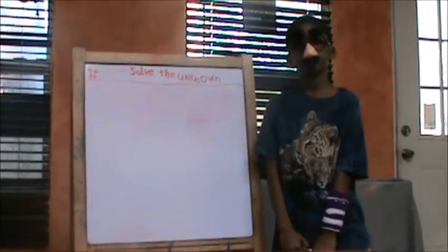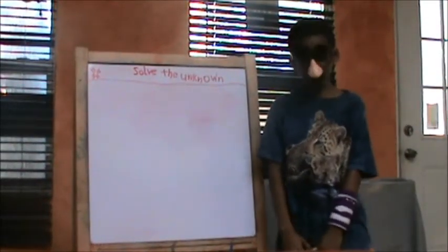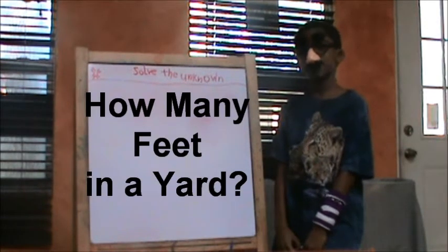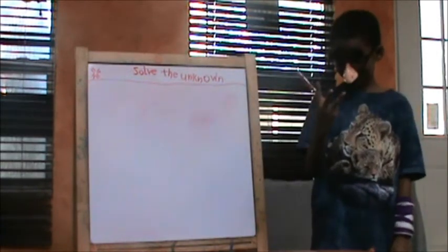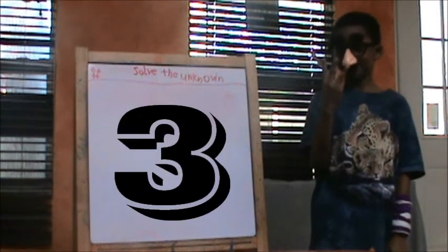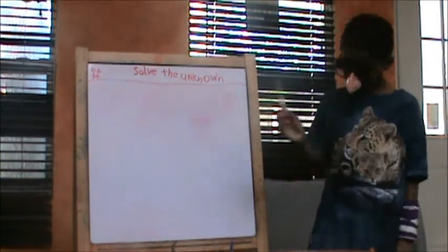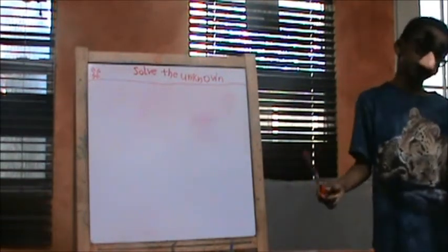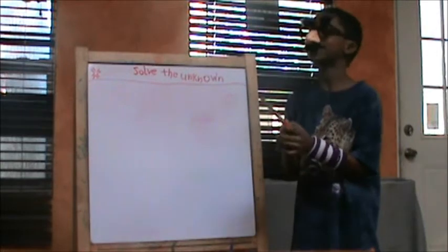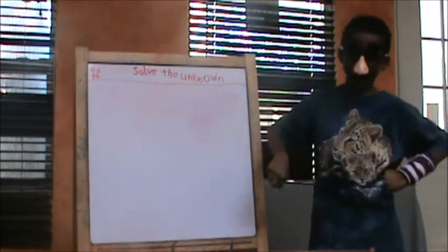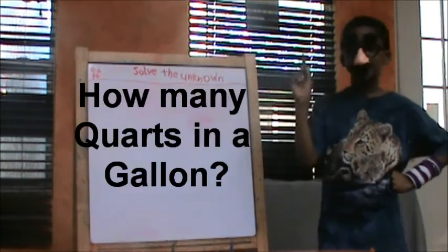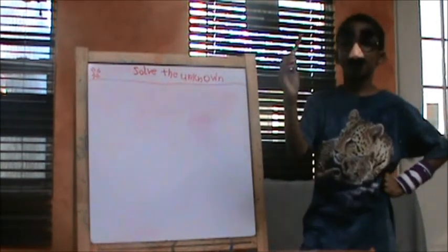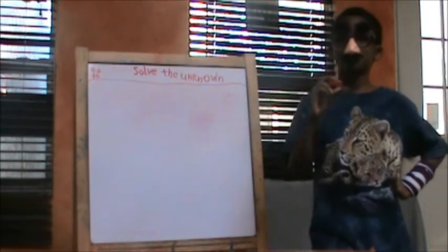Okay, today, before we go on, let me ask you a few questions. How many feet in the yard? That would be three. And how many teaspoons in a tablespoon? Three. How many days in a week? Seven. And how many quarts in a gallon? That would be eight — four. And how many pints in a gallon? Eight.